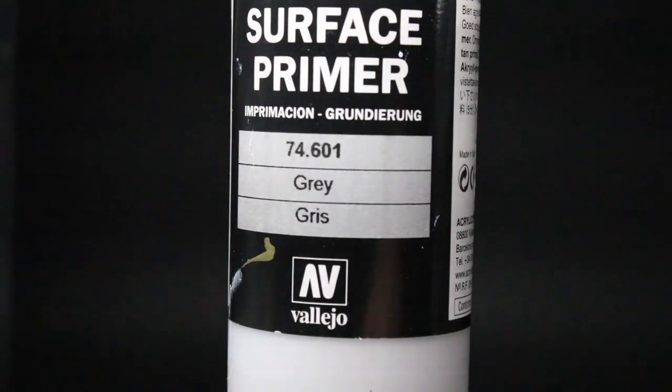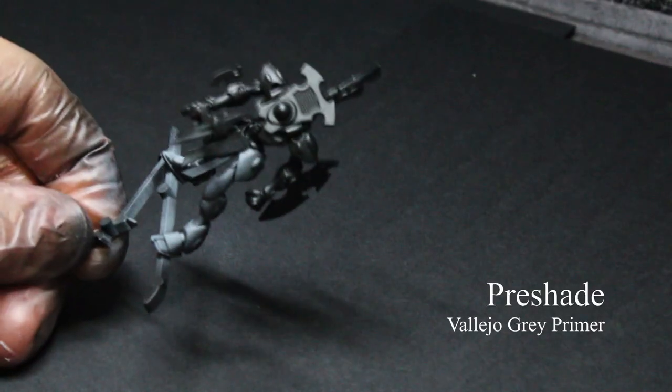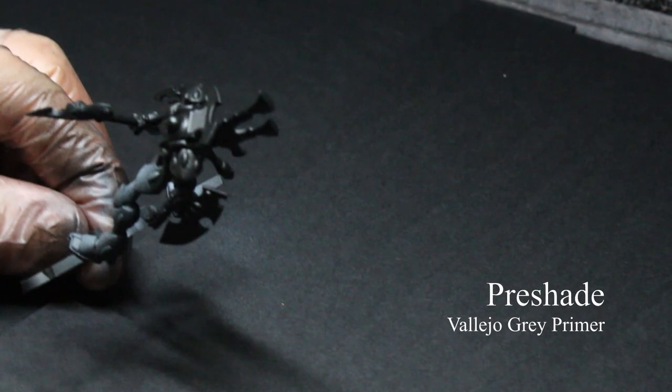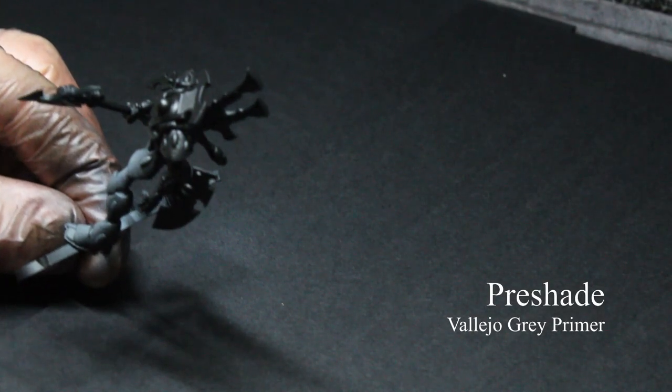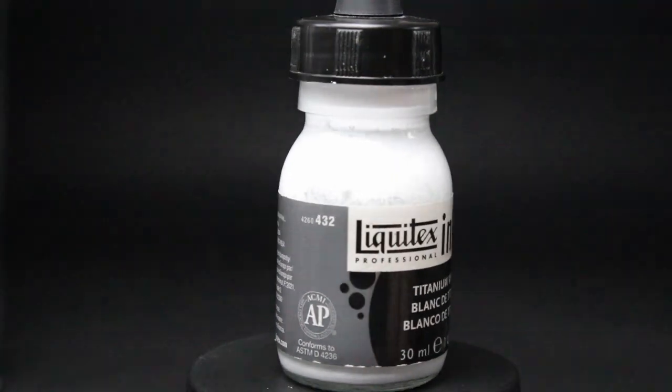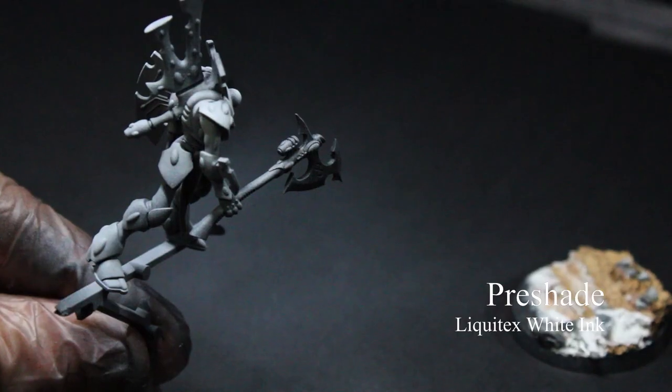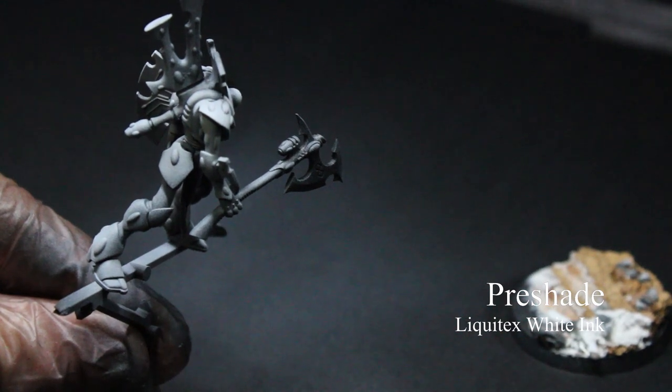The first few segments will be focused on priming the model. I included this for those that are unfamiliar with zenithal priming or undershading. Begin by adding Vallejo Black Primer to your model at approximately 30 PSI.